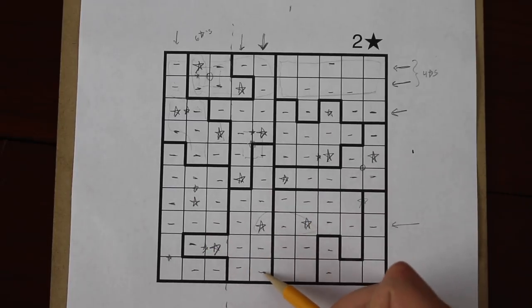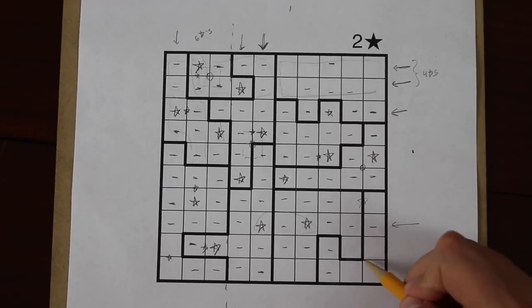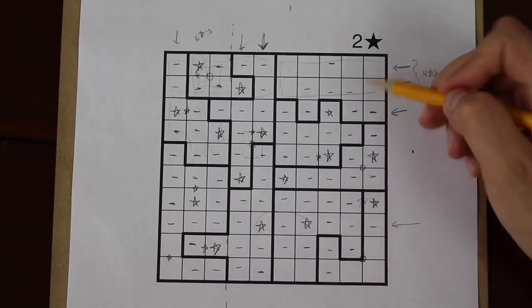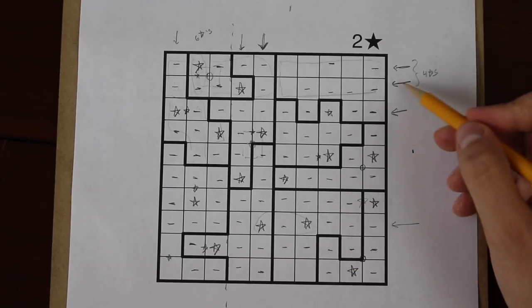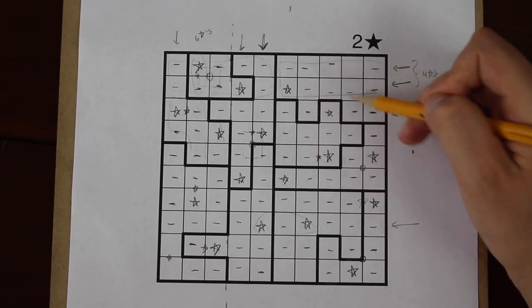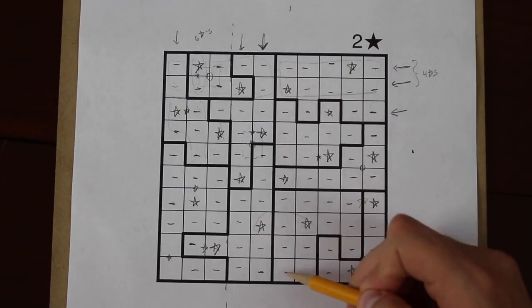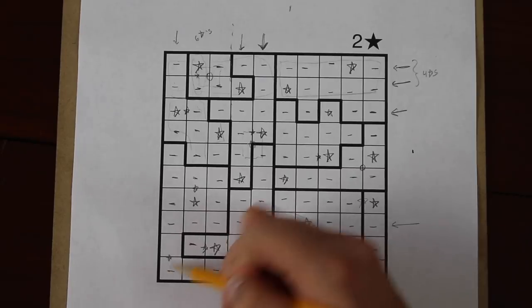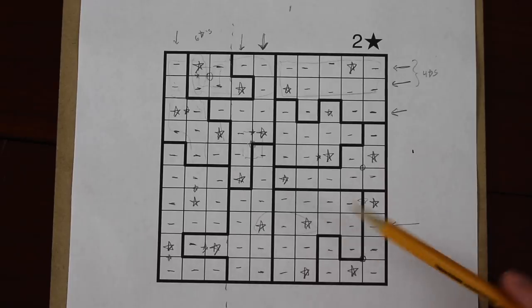This region is now full. This region now only has two spaces where you can fit a star. There's now two stars in this column. This row needs two stars. This region only has one star left. This column here has two stars. This column only has one place left where a star can go. And there's only one space left in this region where you can place a star. And that's the puzzle.